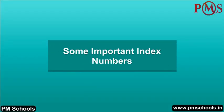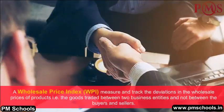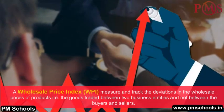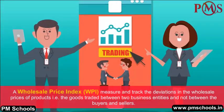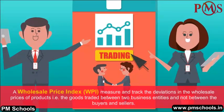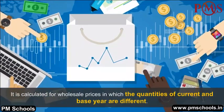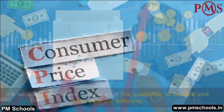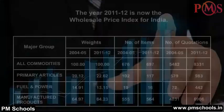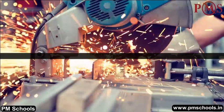Wholesale Price Index (WPI). A Wholesale Price Index measures and tracks the deviations in the wholesale prices of products — that is, goods traded between two business entities and not between buyers and sellers. It is calculated for wholesale prices in which the quantities of the current and base year are different. Unlike the CPI, it does not have any reference consumer category. The year 2011–12 is now used as the base year for the wholesale price index for India.